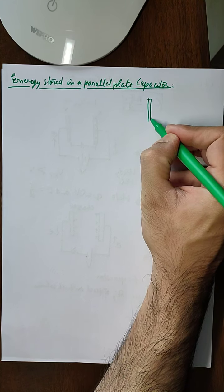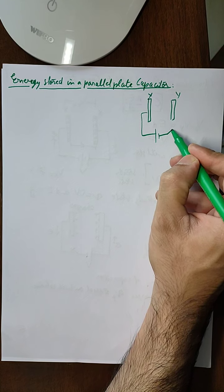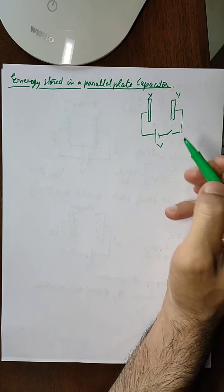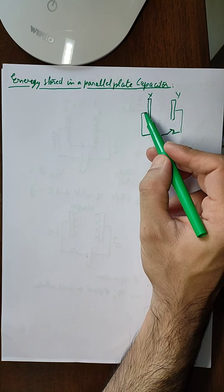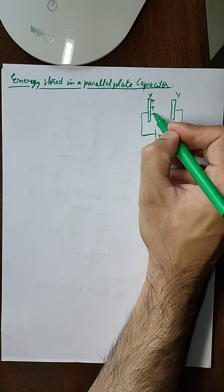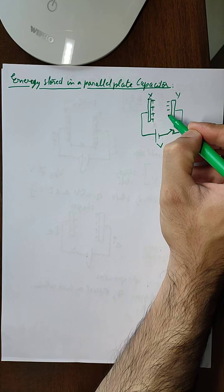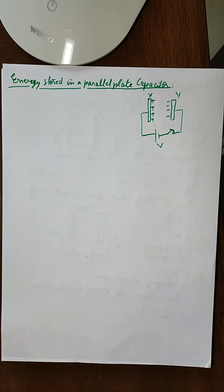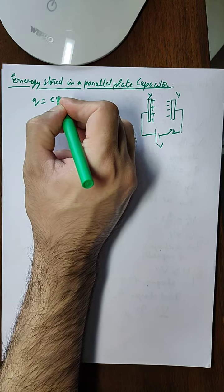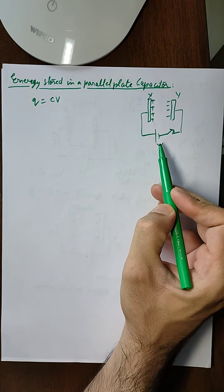In this video we will study the energy stored in a parallel plate capacitor. In previous videos we studied that if we have two conducting plates X and Y connected with an external battery of potential difference V, then on closing the switch charge flows from X to Y. As a result, positive charge is deposited on X and equal negative charge on Y, giving us the formula Q equals CV.